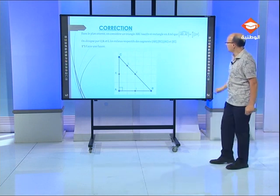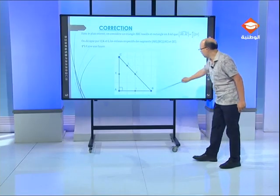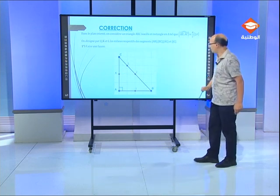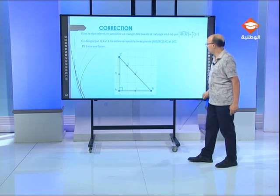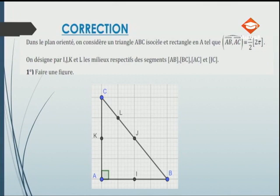Dans le plan orienté, on considère un triangle ABC isocèle et rectangle en A. La mesure de l'angle orienté AB, AC est congrue à π/2 modulo π. On désigne par I, J, K et L les milieux respectifs des segments AB, BC, AC et JC. On a I milieu de AB, J milieu de CB, K milieu de AC et L milieu de JC. Le triangle est isocèle, rectangle et de sens direct.